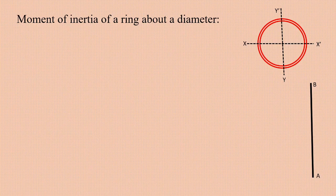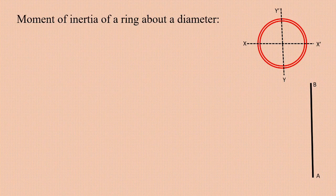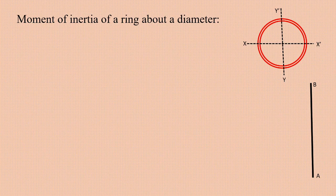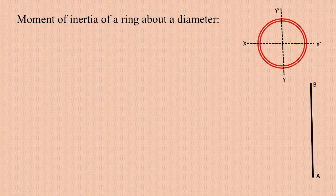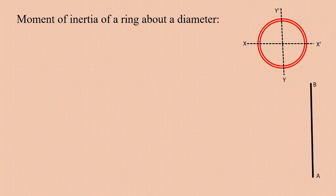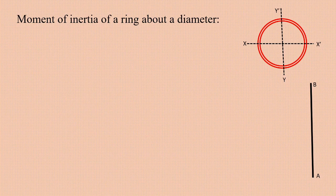We already have the moment of inertia of the ring about a perpendicular axis passing through the center, that is MR². The moment of inertia about XX' and the moment of inertia about YY' are the same, because these two axes are diameters. Diameters are the same, so we can find the moment of inertia about any diameter and call it I.